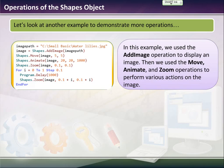In this example, we're going to use add image to display an image. Then we'll move, animate, and zoom the image. It says, let image path equal, and then it shows the path of where the image is.